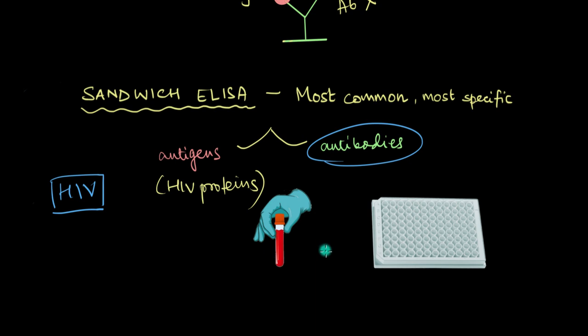In order to get started, we are going to need two things. One, we are going to need a blood sample from the patient and the second thing we are going to need is this plate or tray in which ELISA is carried out.